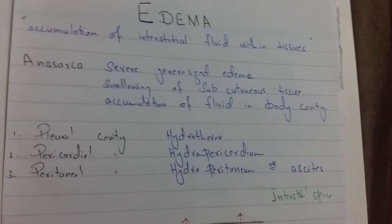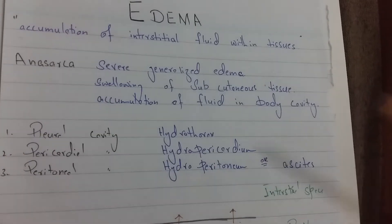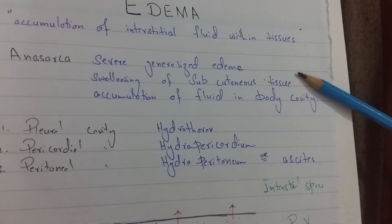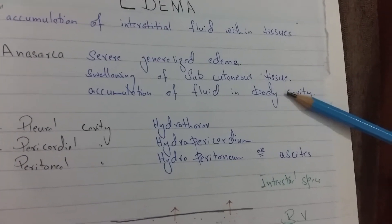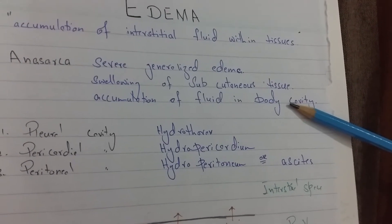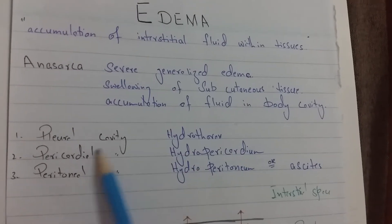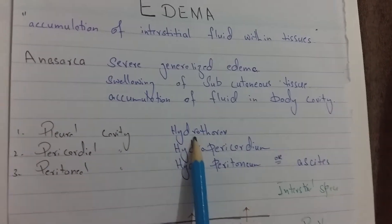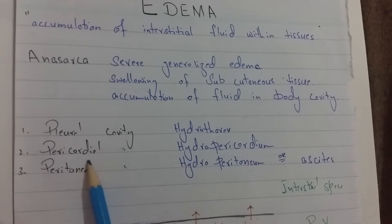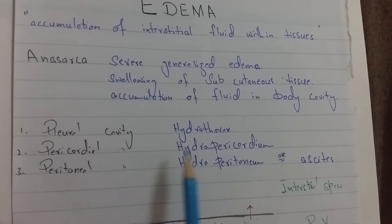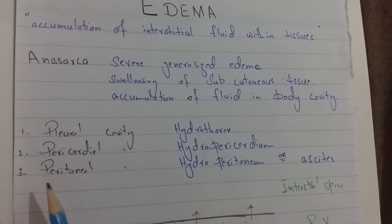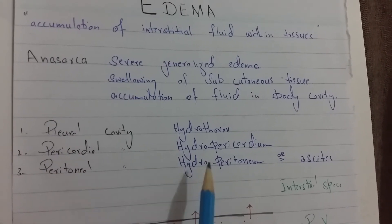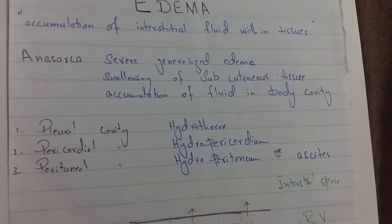In this condition, you can see the swelling of subcutaneous tissue and fluid accumulates into the body cavities. For example, fluid in the pleural cavity is known as hydrothorax. Fluid accumulating in the pericardial cavity is known as hydropericardium, and fluid accumulating in the peritoneal cavity is known as hydroperitoneum.